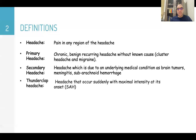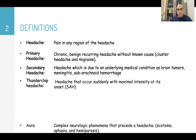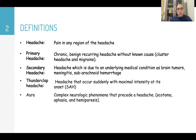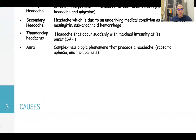Thunderclap headache is a headache which suddenly starts with maximal intensity at its onset. Aura is a complex neurological phenomenon that precedes the headache, such as scotoma, aphasia, and hemiparesis.